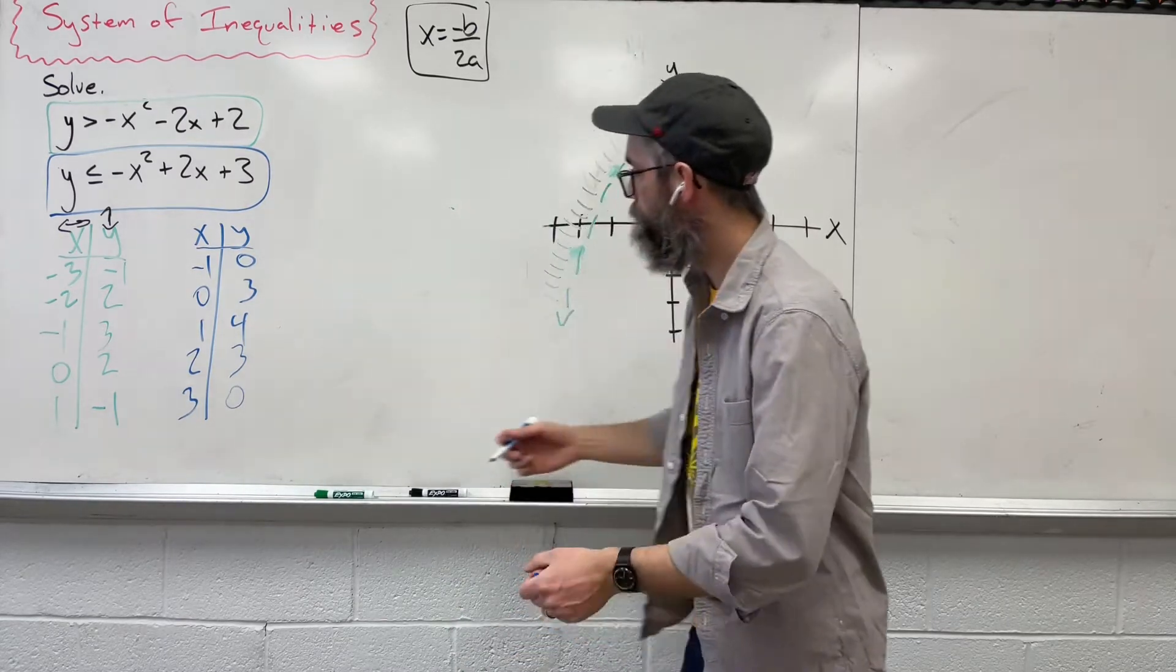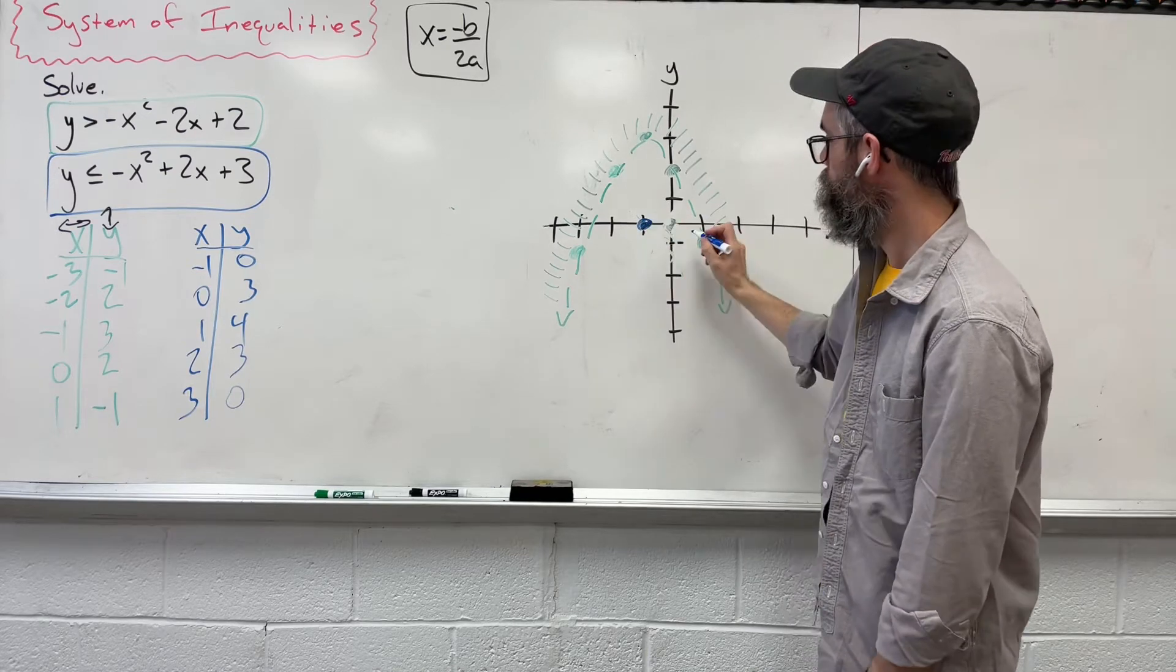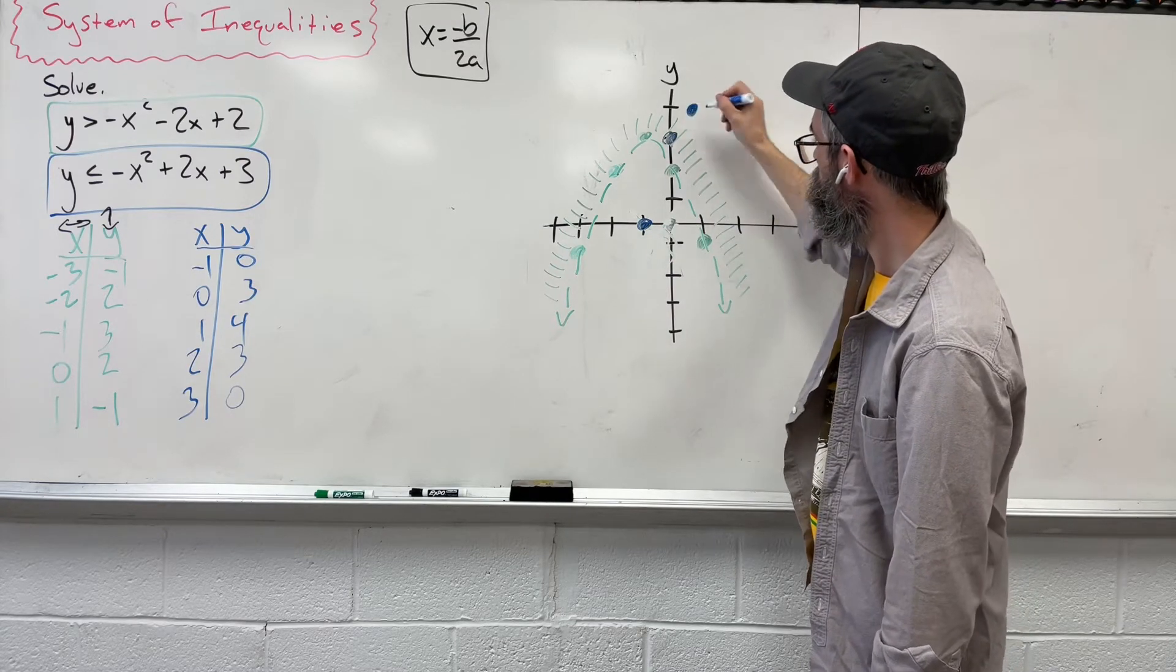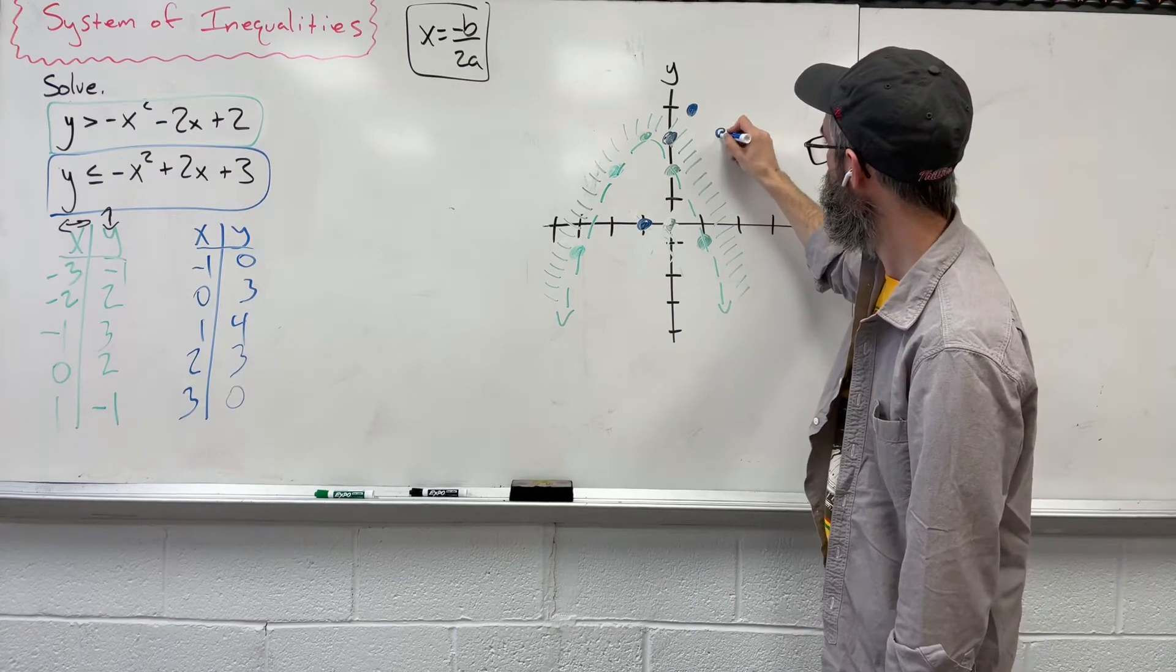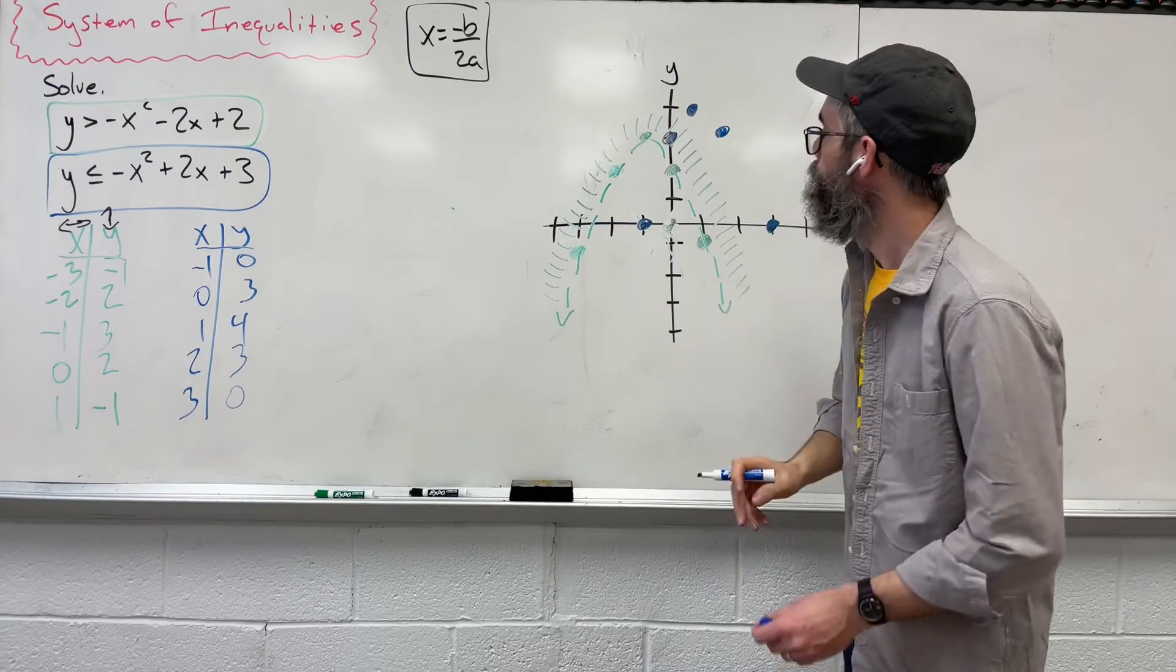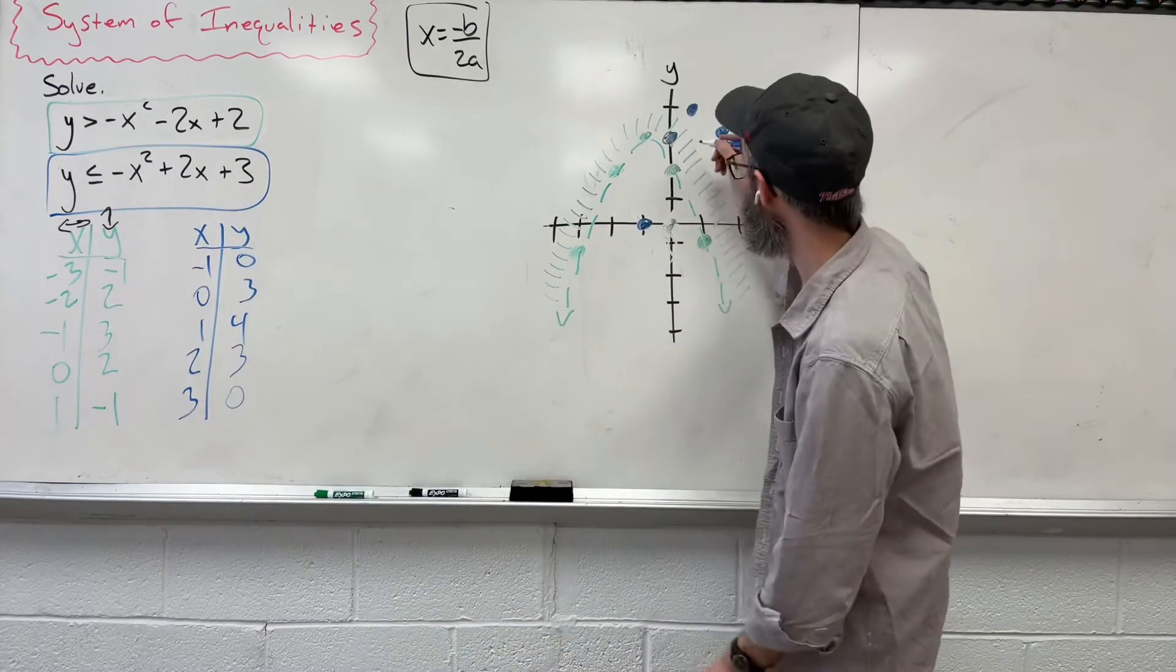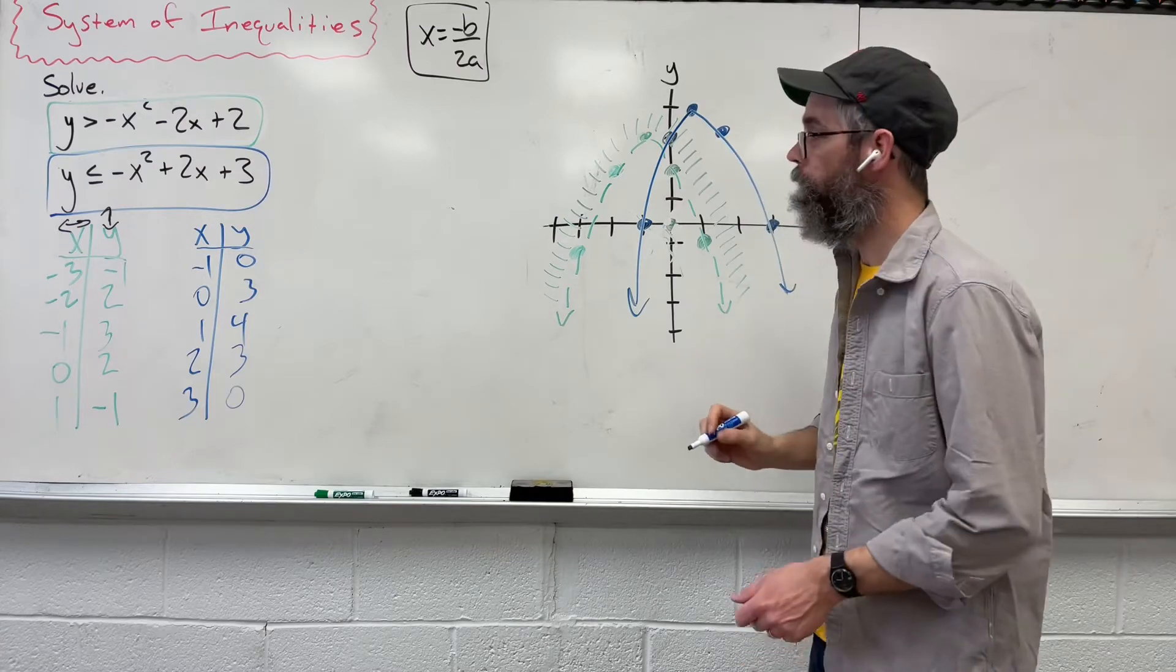So get rid of that, and let's do this all again with a second inequality. All right, let's plot these points. Back 1 up 0, over 0 up 3, over 1 up 4, over 2 up 3, and then 3, 0. Now before we connect these, we've got to ask, is it going to be a solid or dashed line? Because we have an equal sign, that's got to be a solid line.